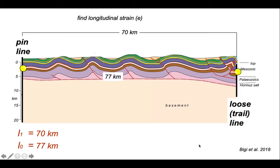So L0, 77 kilometres. L1, the length today, 70 kilometres. So we'll apply the equation for elongation. And the number is minus 0.09.